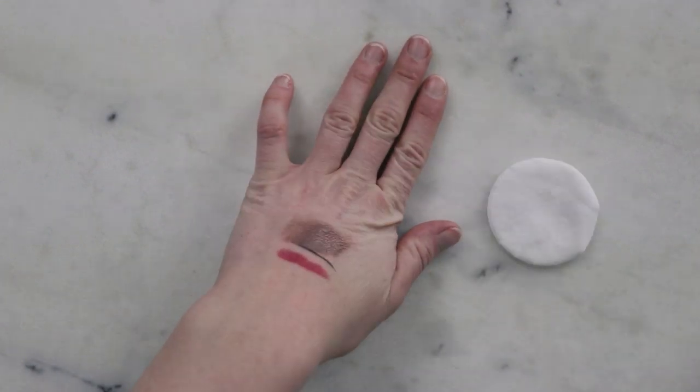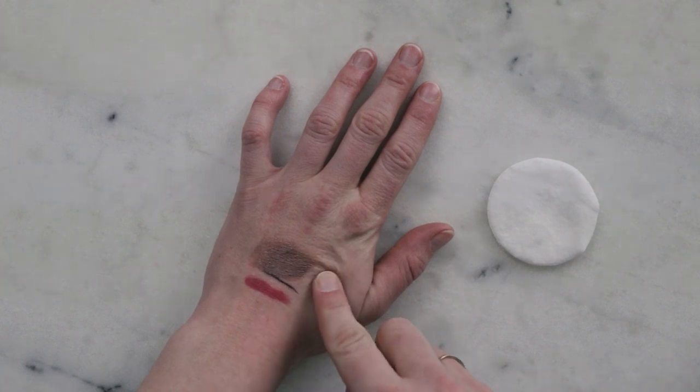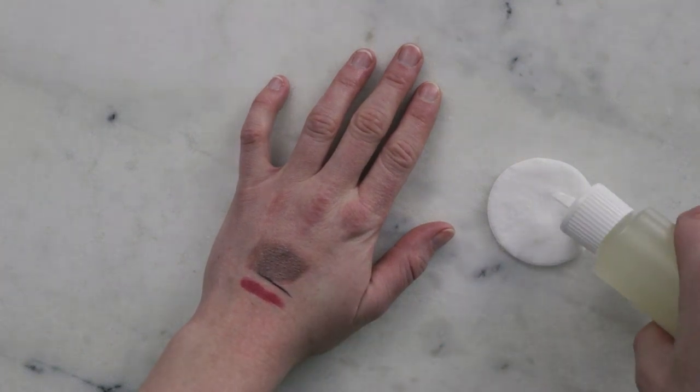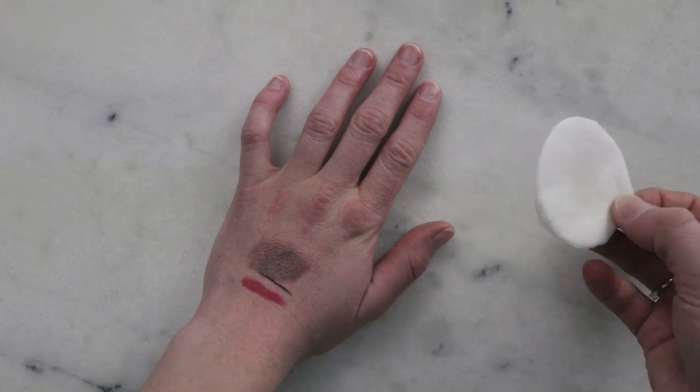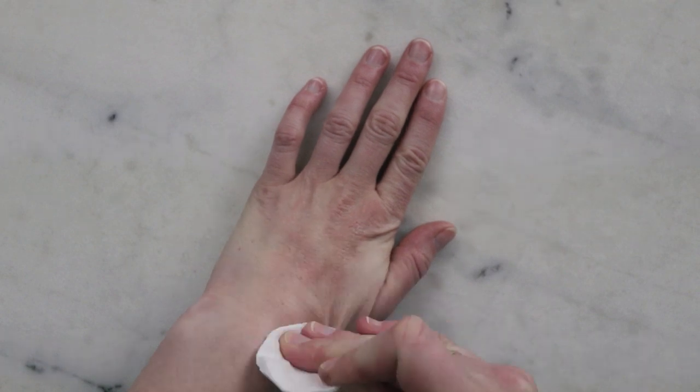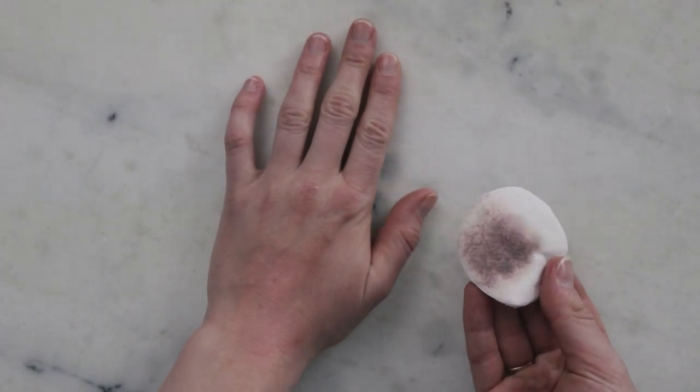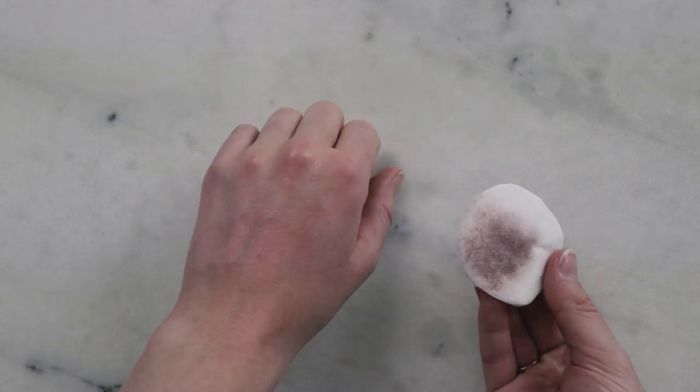And then for a demo of it taking off some makeup, I've smeared some makeup on my hands, so I've got some lipstick, some eyeliner, and some cream eyeshadow here. When I'm taking off eye makeup, I do like to put the cleansing oil on a little cotton pad, but when I'm doing the rest of my face, I don't need one. There, you can see that that worked really well, which is exactly what we want.